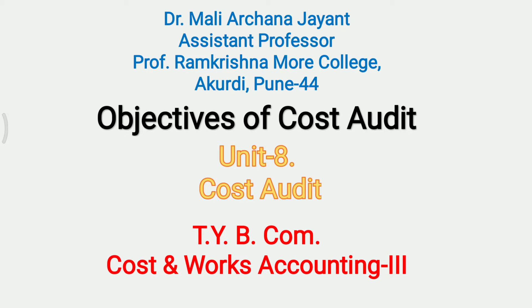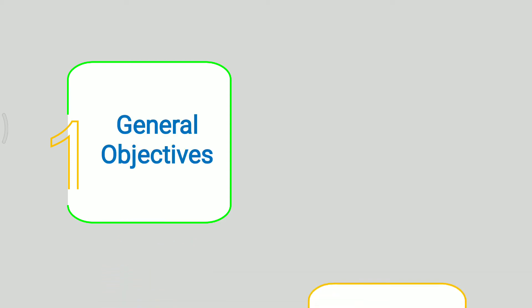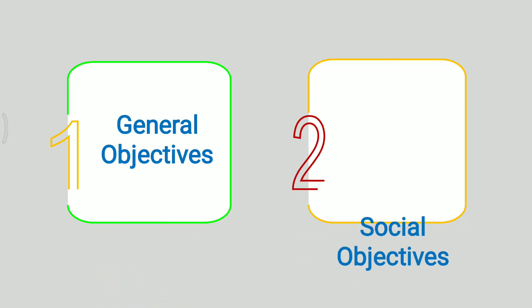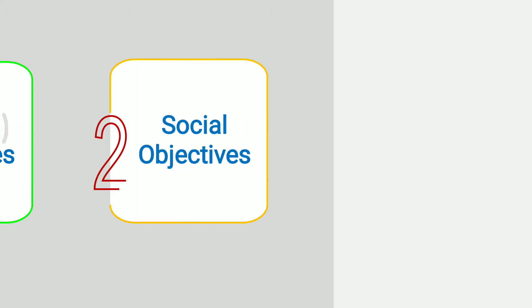There are two types of objectives. First is General Objectives and Second is Social Objectives. First we will see General Objectives.